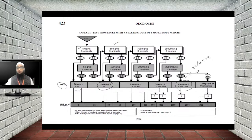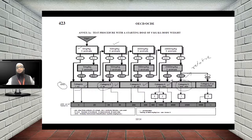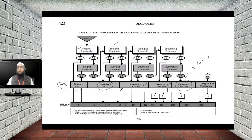As the dose moves from 5 to 2000 mg/kg, drug safety increases. Category 1 represents the highest toxicity; category 4 is relatively safe; drugs above 2000 mg/kg are generally considered the safest per OECD guidelines. This step-by-step single-dose classification process is why the method is called the acute toxicity class method.